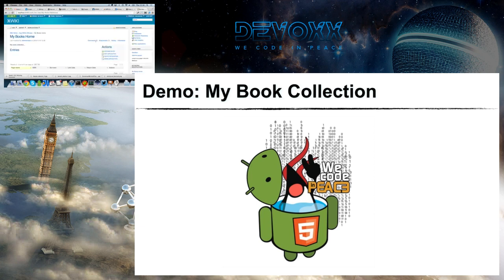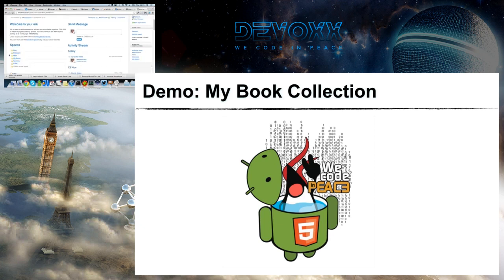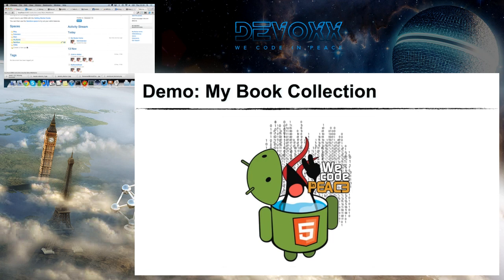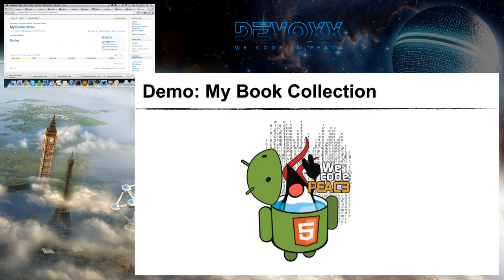Several things have happened. In the application panel, there is a new entry called 'My Books'. We've created a new book application that resides there. If we go back to the wiki home in the list of spaces, there's a new space called 'My Books' — this is where the wizard has created the pages that make up the application. Clicking on it takes us to the new book application's homepage, where I can now add some entries.